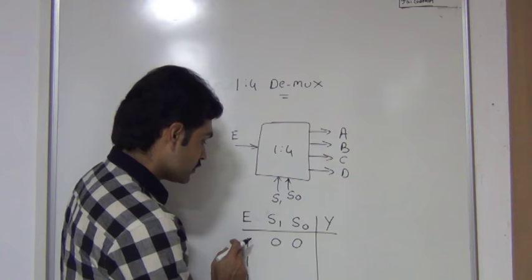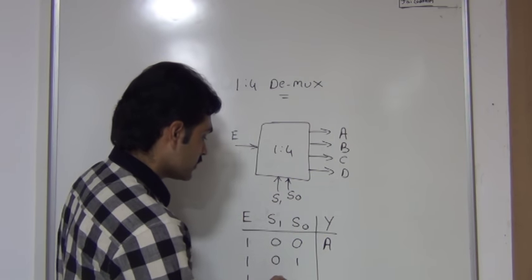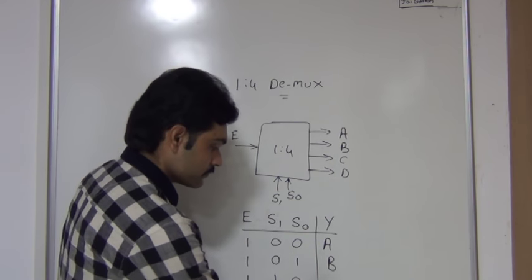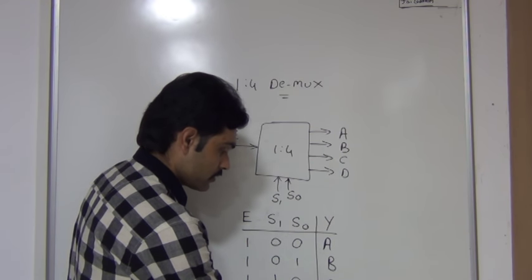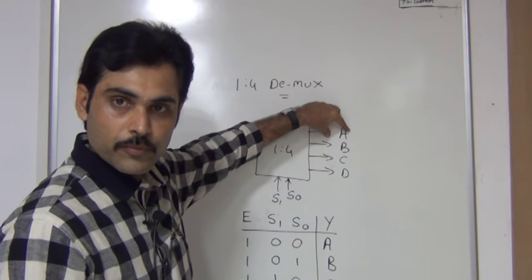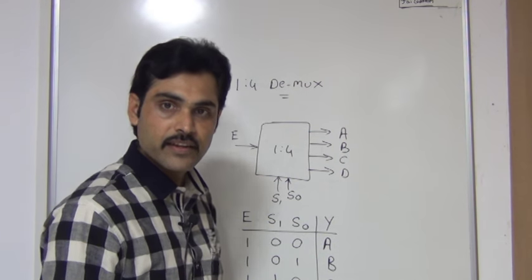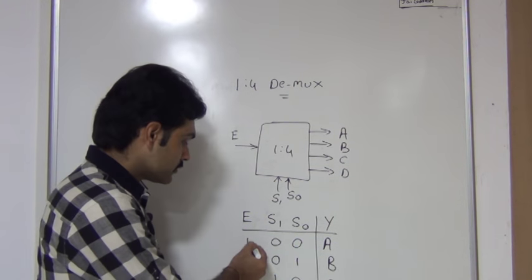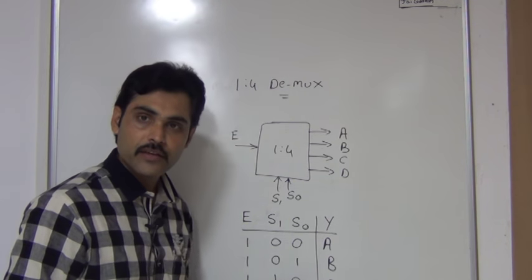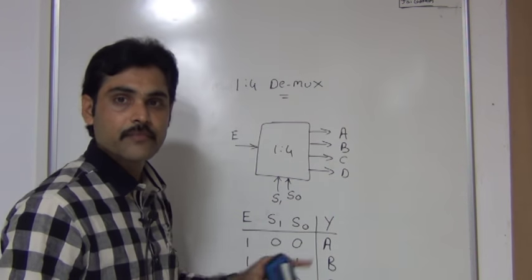If selection lines are 0, 0 and input is present, you will get output through line A. If selection lines are 0, 1 and E is 1, output you will get from B. Third case: 1, 0 — output from C. And 1, 1 — output from D. So in the 1-to-4 demultiplexer, there is 1 input and 4 outputs, requiring 2 selection lines. This is the block diagram and tabular form for the 1-to-4 demultiplexer.